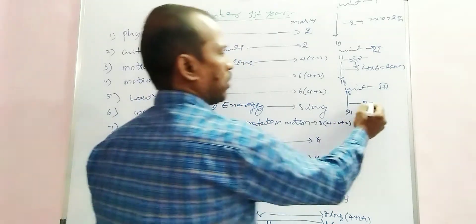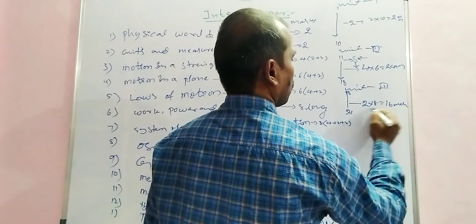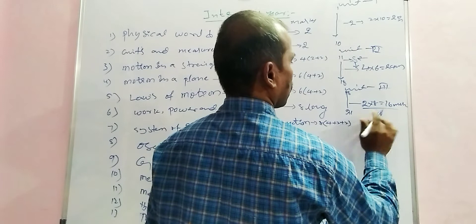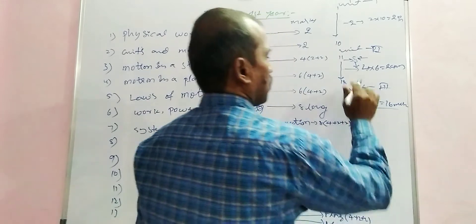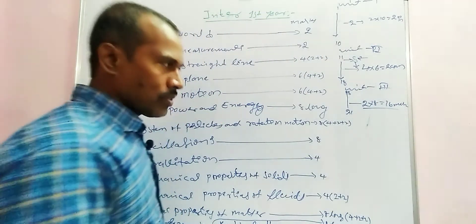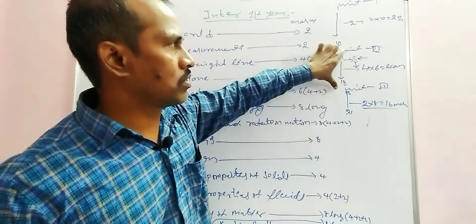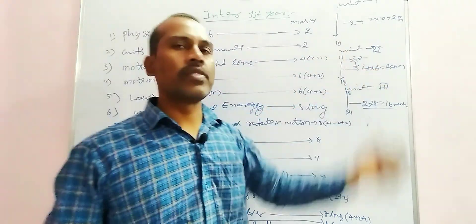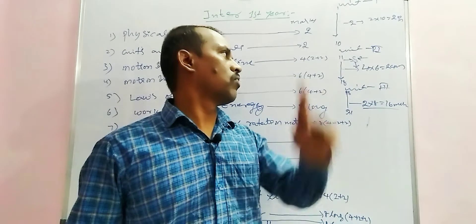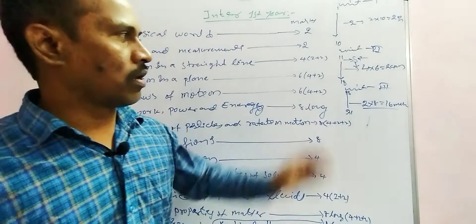For the long answer section, each question carries 8 marks. Two questions attempted gives 2 into 8 equals 16 marks. So in summary: first section — 10 questions of 2 marks each; second section — 6 questions of 4 marks each; third section — long answers of 8 marks each, attempt three questions.